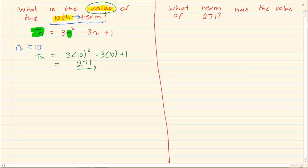Now look how they can change the question. Now they are asking you what term has the value of 271? So what are they giving us now? We know that the formula is tn is equal to 3n squared minus 3n plus 1. Now they are telling us that the total value is equal to 271. So we have 271 is equal to 3n squared minus 3n plus 1.